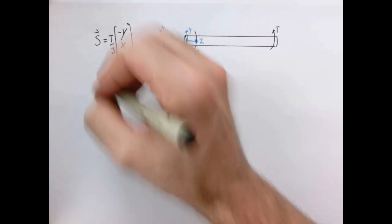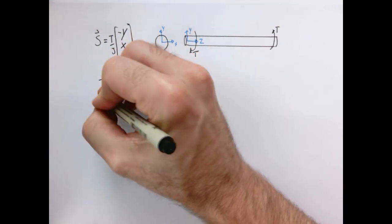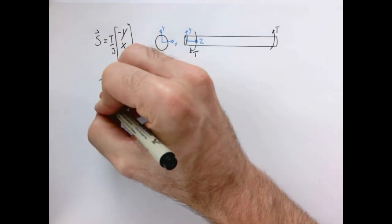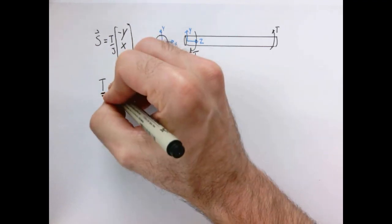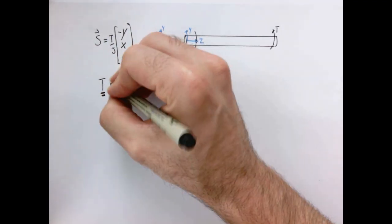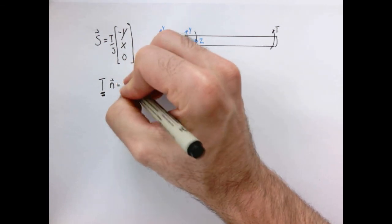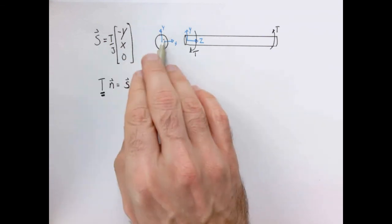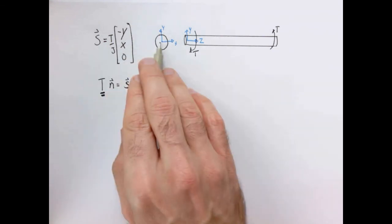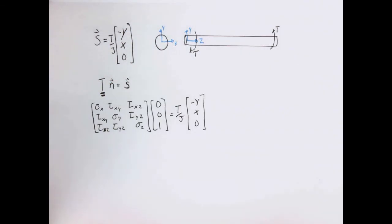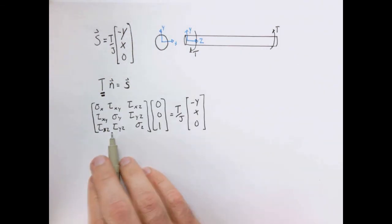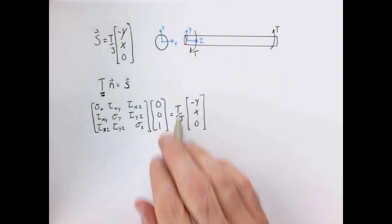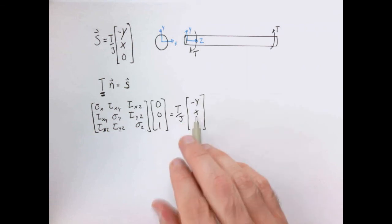Now let's turn this stress vector into a stress tensor. Using matrix notation, if I take the stress tensor (capital T, with two lines under it, not to be confused with the torque — a little notation confusion here) and operate on our normal vector n, I should get back the stress vector. This is the stress vector on this surface, so the normal vector is the one pointing out of the page, (0, 0, 1). So the stress tensor times (0, 0, 1) should give us (T/J)(-y, x, 0).